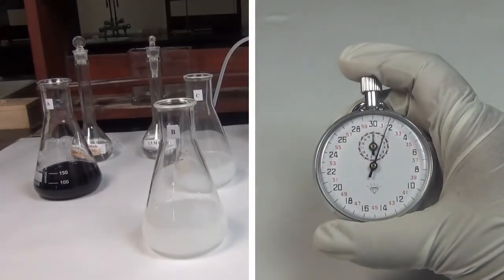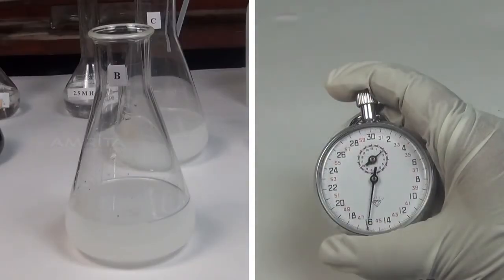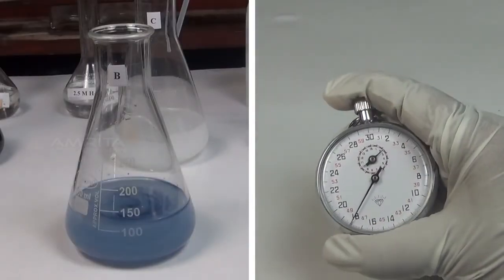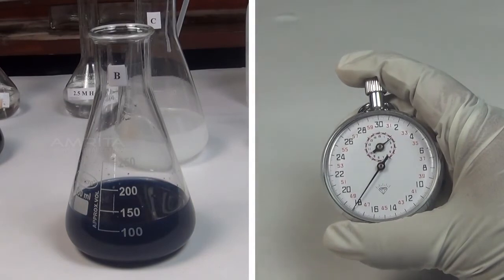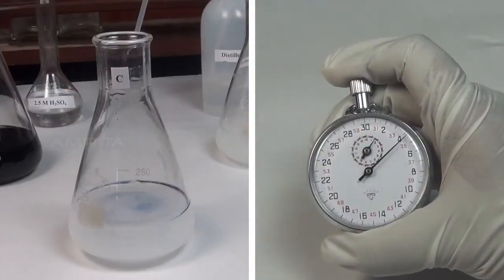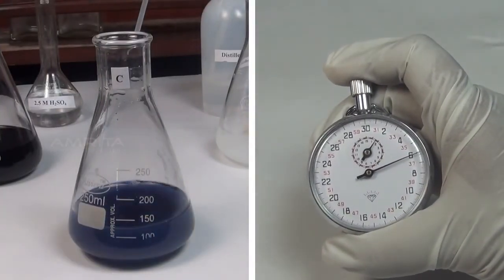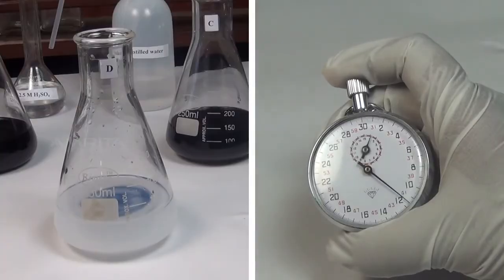Repeat the experiment by adding 5 ml of 3% hydrogen peroxide solution to flasks B, C, and D and note the time required in each case for the blue colour to just start appearing.